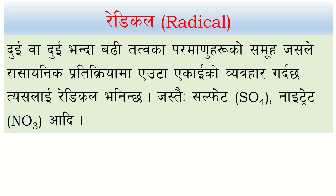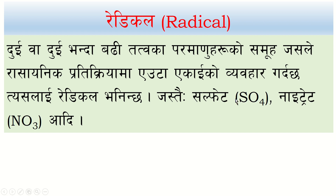A radical acts as a single unit. For example, sulfate is a radical — one sulfur atom combines with 4 oxygen atoms, but it has no independent existence. Similarly, one nitrogen atom combines with 3 oxygen atoms to form nitrate, which also has no independent existence. These radicals combine with other elements to form compounds.